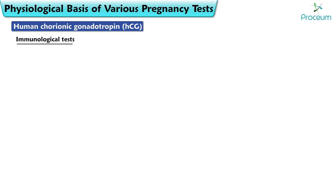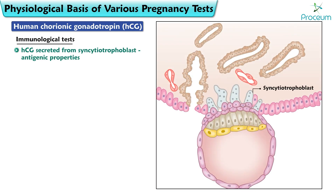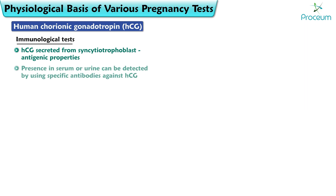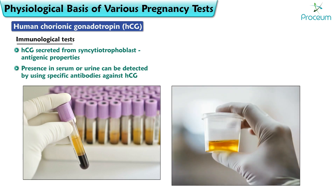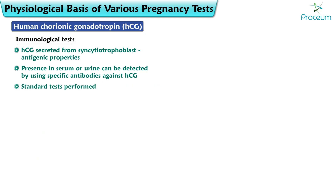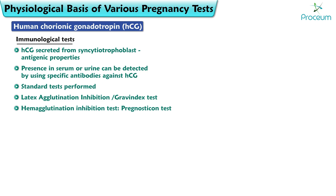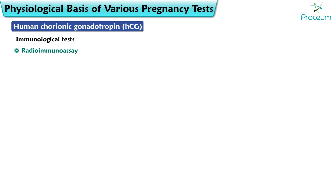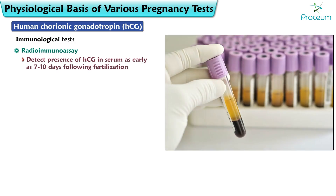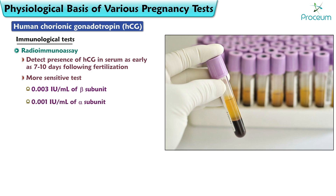Immunological Test: Human chorionic gonadotropin secreted from the syncytiotrophoblast has antigenic properties. Its presence in the serum or urine can be detected using specific antibodies against HCG. Standard immunological tests include the Latex agglutination inhibition test (Gravindex test) and Hemagglutination inhibition test (Prognosticon test). Radioimmunoassay is used to detect HCG in the serum as early as 7 to 10 days following fertilization. This is a more sensitive test that can detect even 0.003 international units per milliliter of the beta subunit and 0.001 international units per milliliter of the alpha subunit of HCG in the serum.